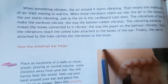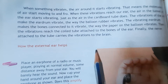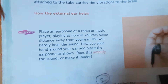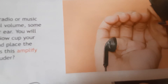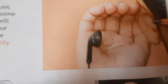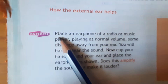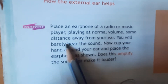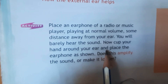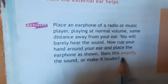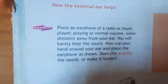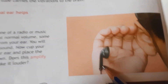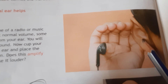This listening of sound has also been studied in the sense organs chapter. Now, one more activity is given: how the external ear helps. We are having this external ear on the outside of the body. In this activity, place an earphone playing at normal volume some distance away from your ear — you will barely hear the sound. Now cup your hand around your ear and place the earphone as shown.